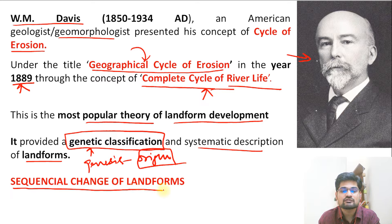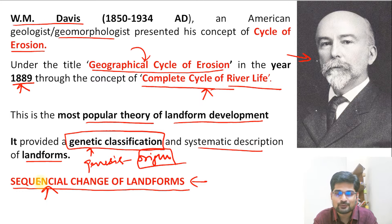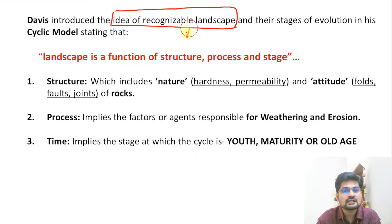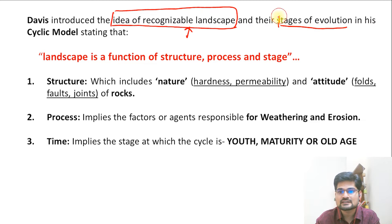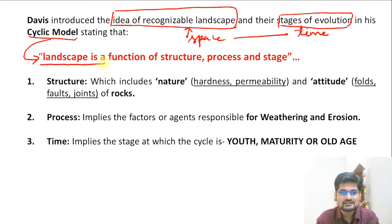Davis described the sequential change of landforms — it means landforms also go through evolution. Right from the beginning of earth till today, the landscape has been evolving with time in a sequential manner. Davis introduced the idea of recognizable landscape, which you can observe and understand in particular stages of evolution. This is about a space-time concept, and his cyclic model is described by the statement: landscape is a function of structure, process, and stage.